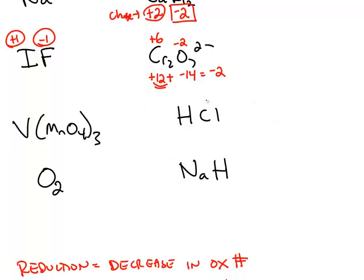In hydrochloric acid, chlorine is more electronegative, so it's assigned negative 1, and hydrogen is positive 1. Hydrogen is usually positive 1, but in a case like sodium hydride, hydrogen is actually more electronegative, so hydrogen is assigned negative 1 and sodium is assigned positive 1.